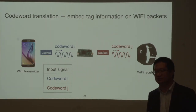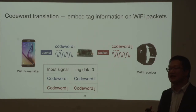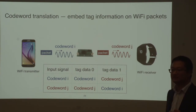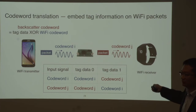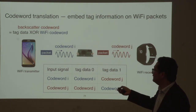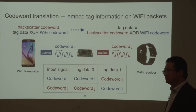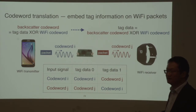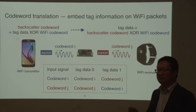The backscatter code word — the reflected code word — is actually the XOR between the tag data and the Wi-Fi transmitter code word. Decoding the tag data becomes really simple: you only need two receivers, one receiving on the reflective channel to get the backscatter code word, and one receiving on the Wi-Fi transmitter channel. Then you XOR the two received packets to decode the tag data. By doing so, the Wi-Fi transmitter can transmit arbitrary packets.